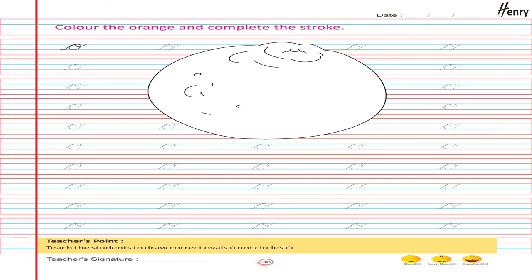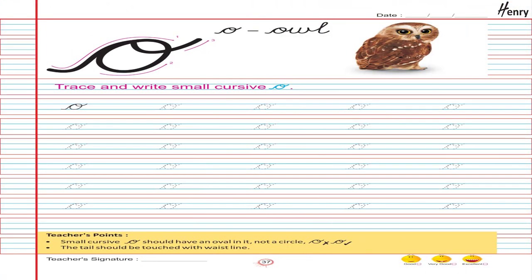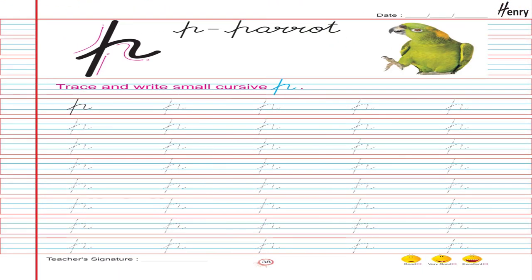Color the orange and complete the stroke. O. Owl. Trace and write small cursive O. P. Parrot. Trace and write small cursive P.